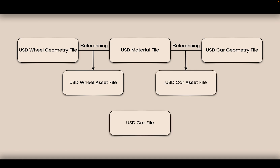Then we have the final car file — the actual car with four wheels — which means we need to reference in the car asset and the textured wheel not once, not twice, but four times. We're referencing in four wheels. We could do it once with some other USD tricks, but for now let's keep it simple — we're referencing it in four times.